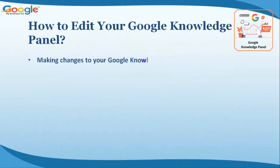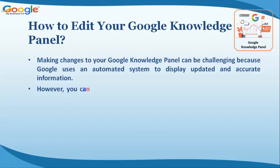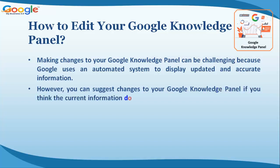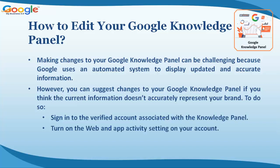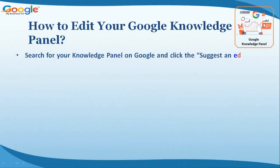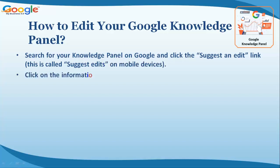Making changes to your Google knowledge panel can be challenging because Google uses an automated system to display updated and accurate information. However, you can suggest changes to your Google knowledge panel if you think the current information doesn't accurately represent your brand. To do so, sign into the verified account associated with the knowledge panel, turn on the web and app activity setting on your account, search for your knowledge panel on Google, and click the 'Suggest edits' link — called 'Suggest edits' on mobile devices as well.